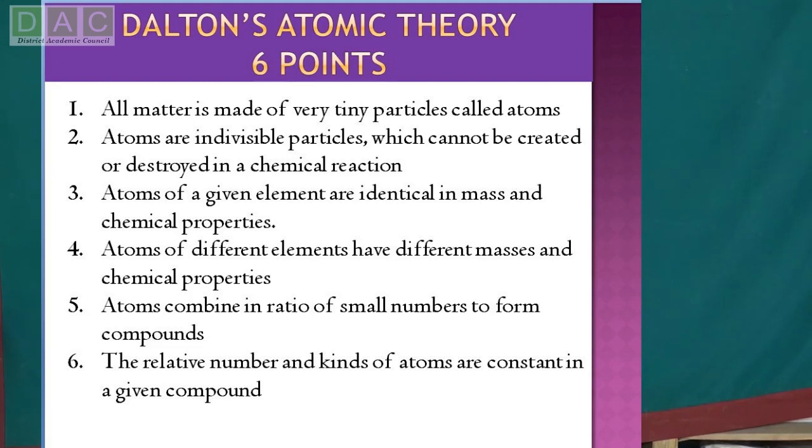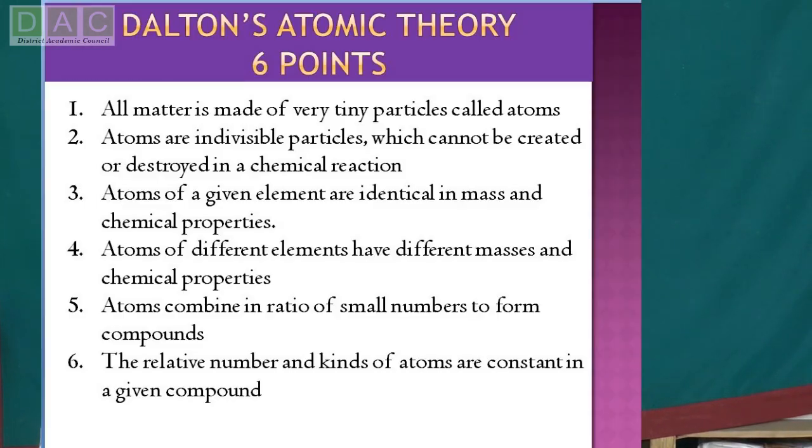Next, we can see Dalton's atomic theory, given by John Dalton. This theory has six points. The first point is that all matter is made up of very tiny particles called atoms. An atom is the smallest particle or entity of matter. The second point is that atoms are indivisible particles which can neither be created nor destroyed in a chemical reaction. Atoms already exist — they cannot be created from nothing and they cannot be destroyed.